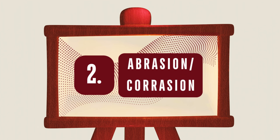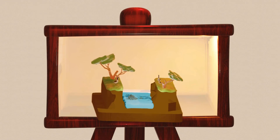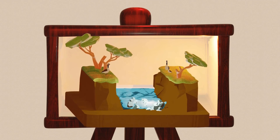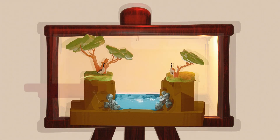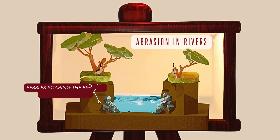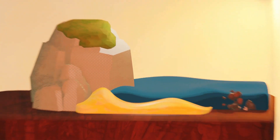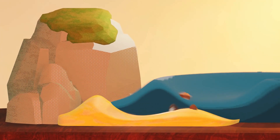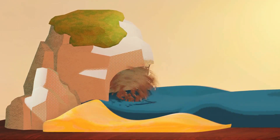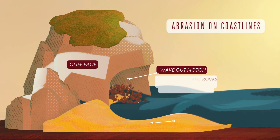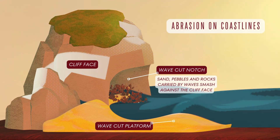Step two: abrasion, also called corrasion, happens when rocks and sediments are carried by water and thrown against surfaces, wearing them down. In rivers, pebbles scrape along the riverbed and banks, gradually eroding away. On coasts, waves pick up sand, pebbles and rocks, smashing them against the cliffs and grinding them down like sandpaper. Abrasion plays a major role in forming wave-cut platforms and widening river channels.